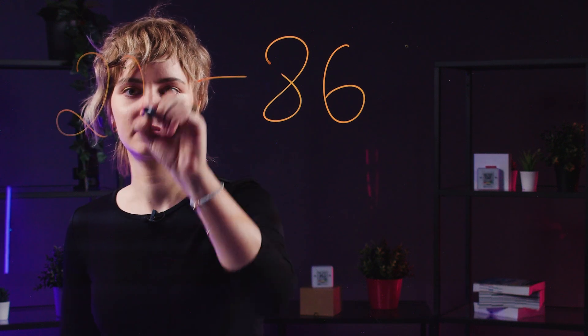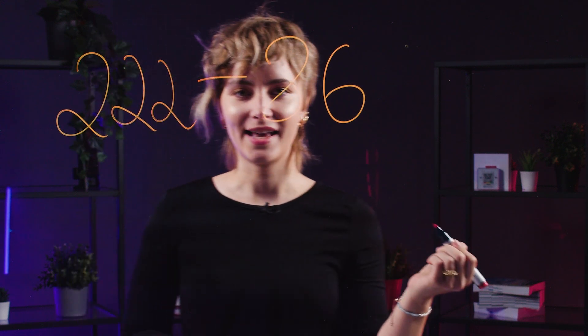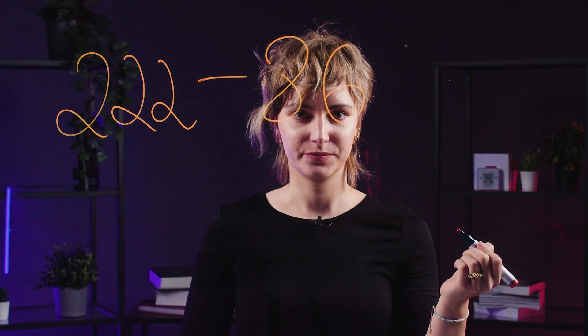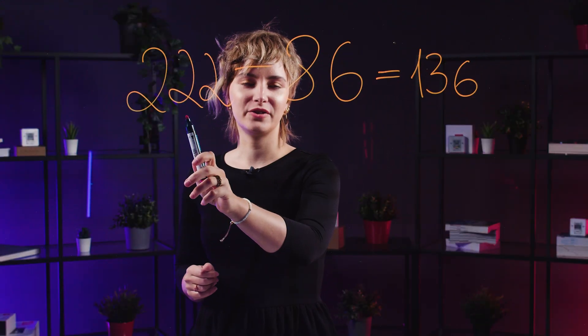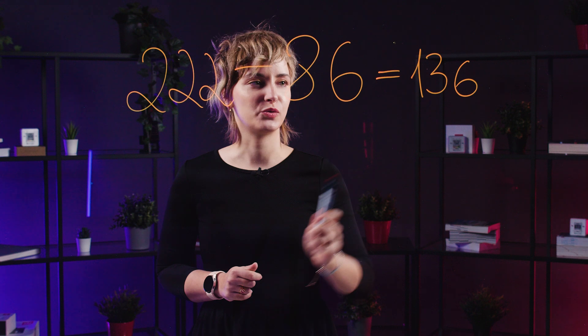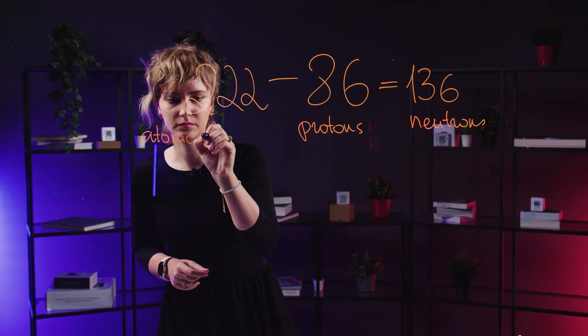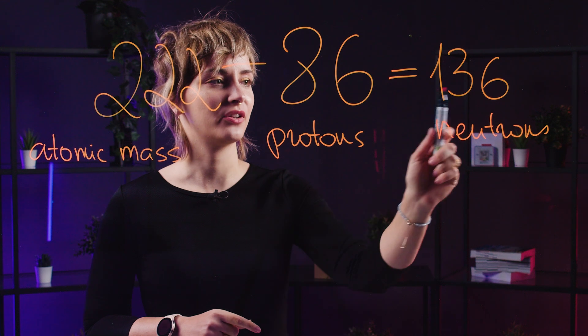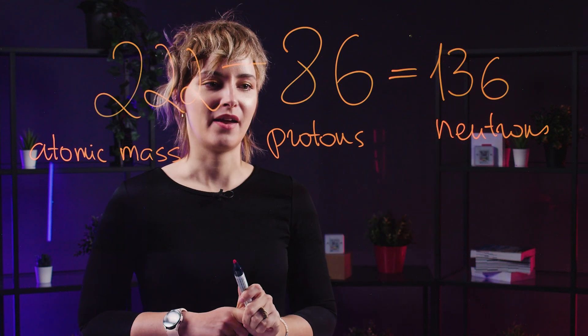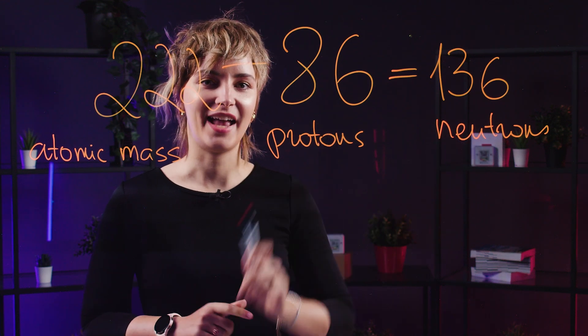Electrons have very little mass. So if we subtract the atomic number from the atomic mass, we can estimate the number of neutrons. For radon-222, that leaves us with 136 neutrons. Different isotopes of radon have varying numbers of neutrons, but radon atoms always have 86 protons.